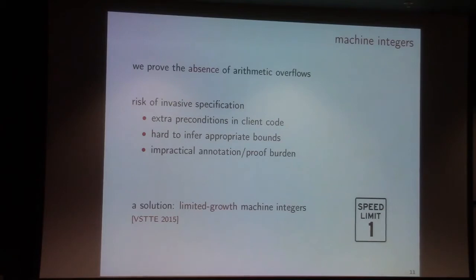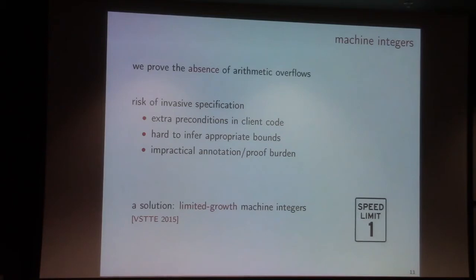But normally this comes with the risk of an invasion of the specification, because we need to give extra preconditions in our client code to say between which values our arguments lie. Sometimes these bounds are very difficult or even impossible to infer, and at the end it's just an impractical annotation burden for proof. So we need another solution.